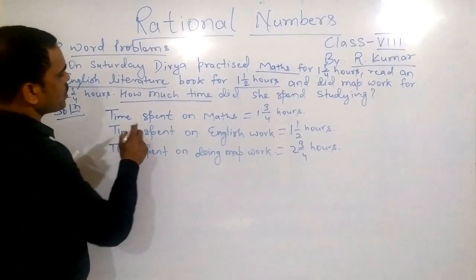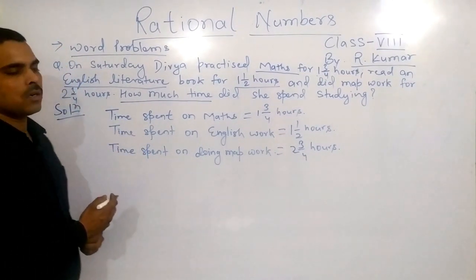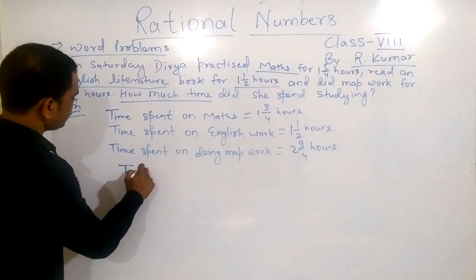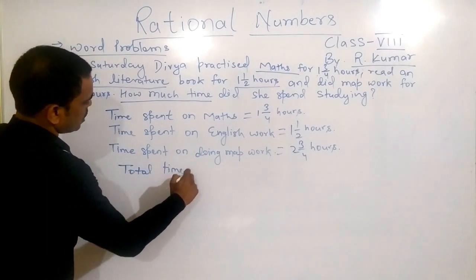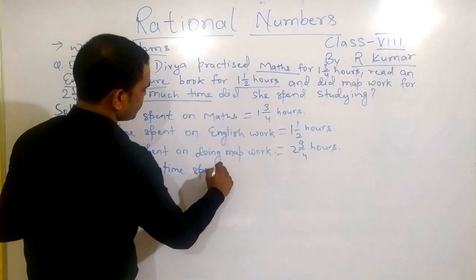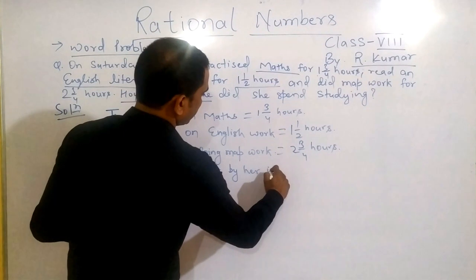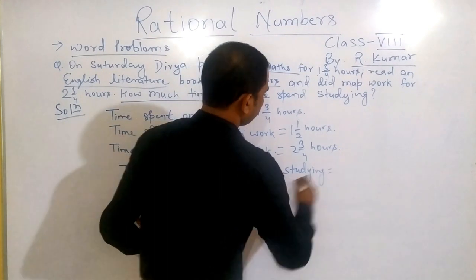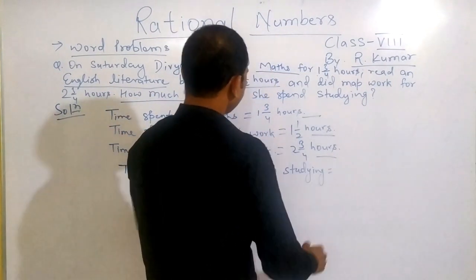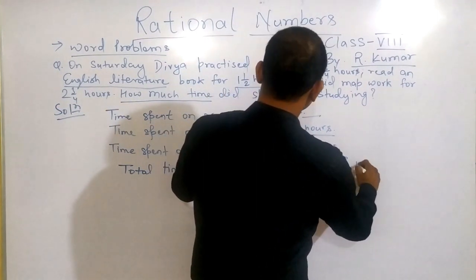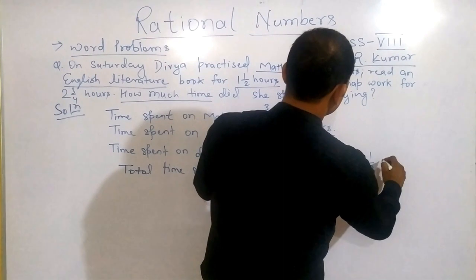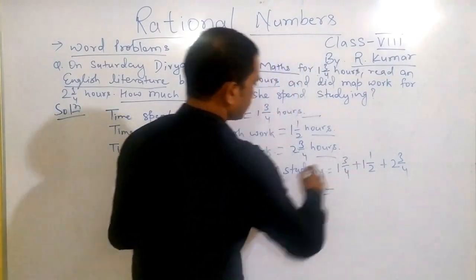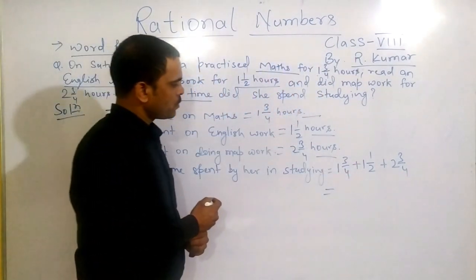Now I have to find how much time did she spend altogether in studying. So total time spent by her in studying - you will simply add all these three: 1 whole 3 by 4 plus 1 whole 1 by 2 plus 2 whole 3 by 4. These all three are in mixed fractions.